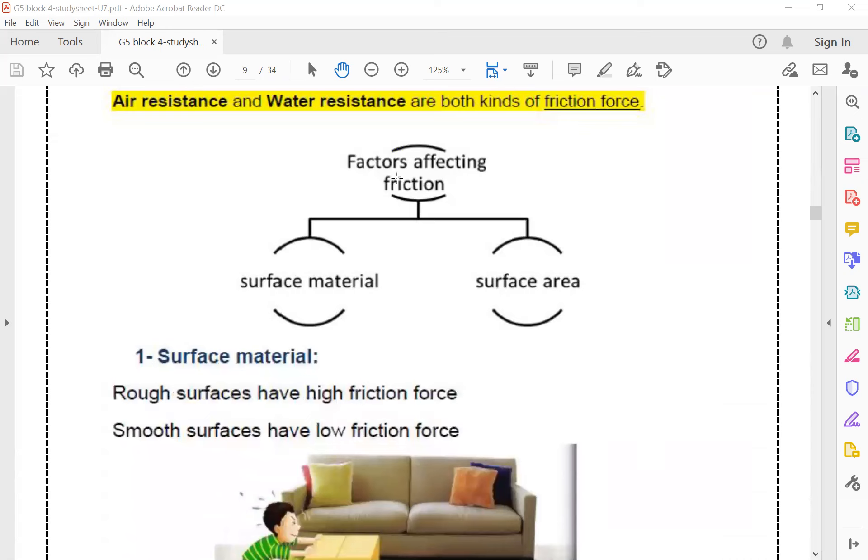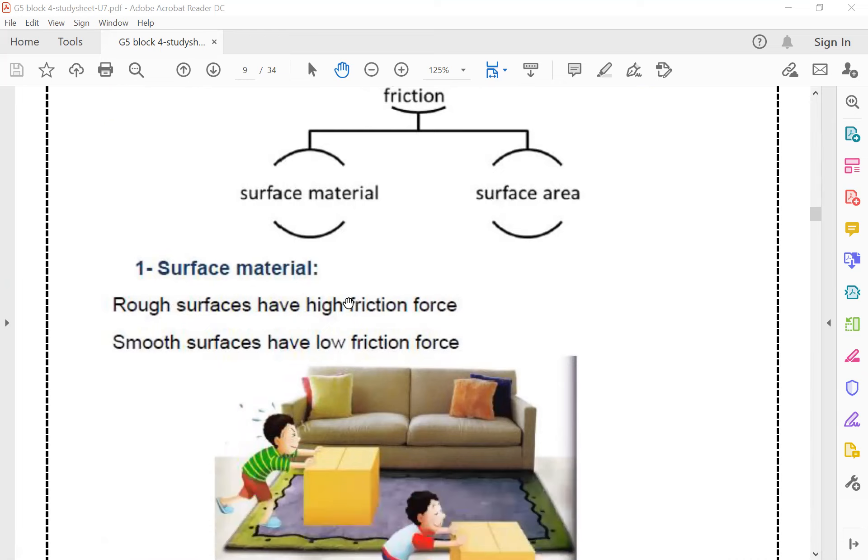What about the factors affecting the friction force? The friction is affected by two factors: the surface material and the surface area. What's the meaning of surface material? The rough surface have high friction force.